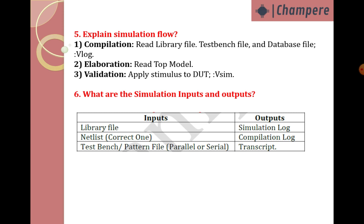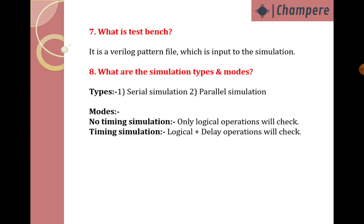What are the simulation inputs and outputs? Simulation inputs are: library file, netlist — mismatch can also occur because of an improper netlist — and test bench, which is the pattern file, which may be a parallel pattern or serial pattern file. These three are inputs. Outputs are: simulation log, compilation log, and transcript.